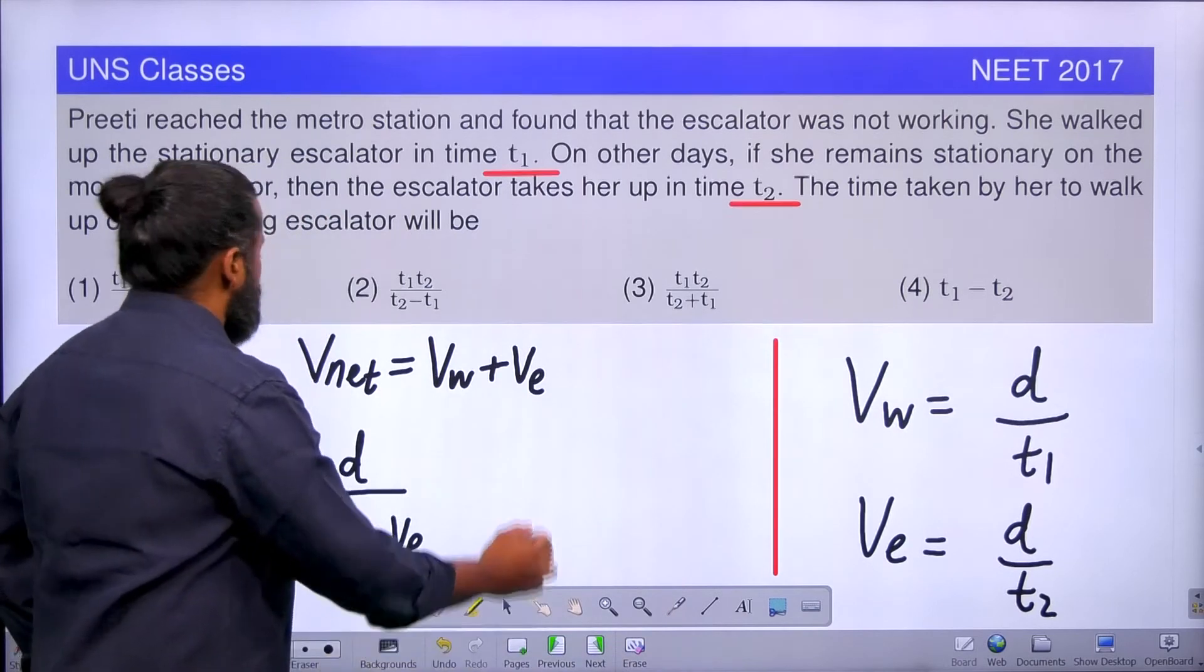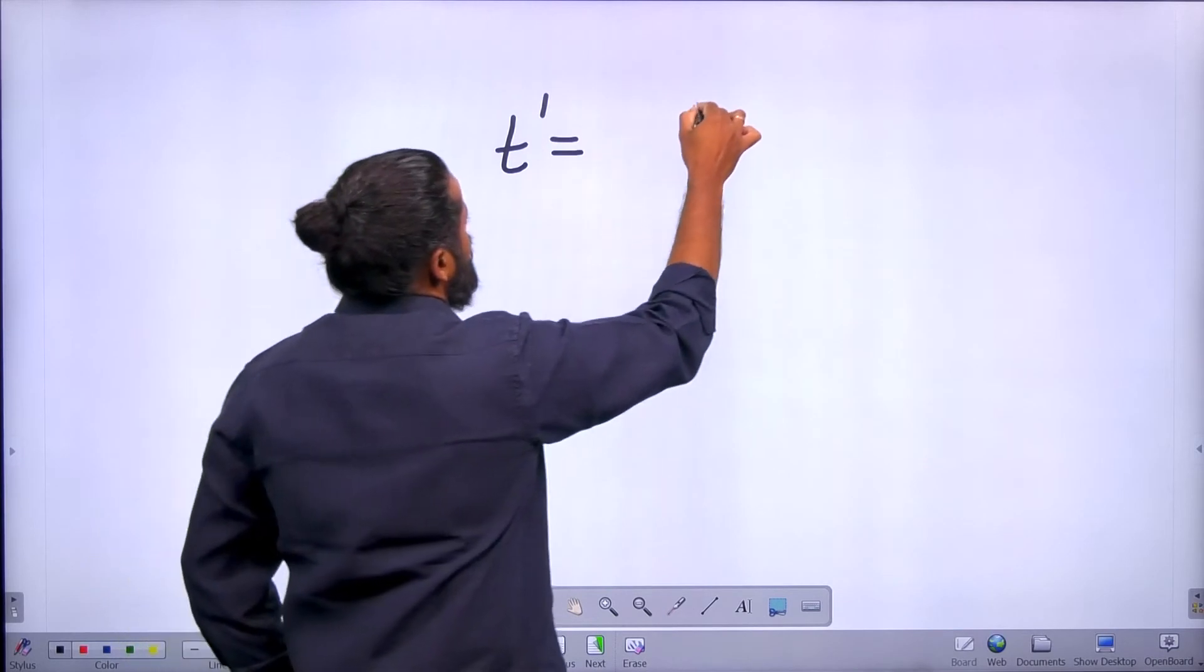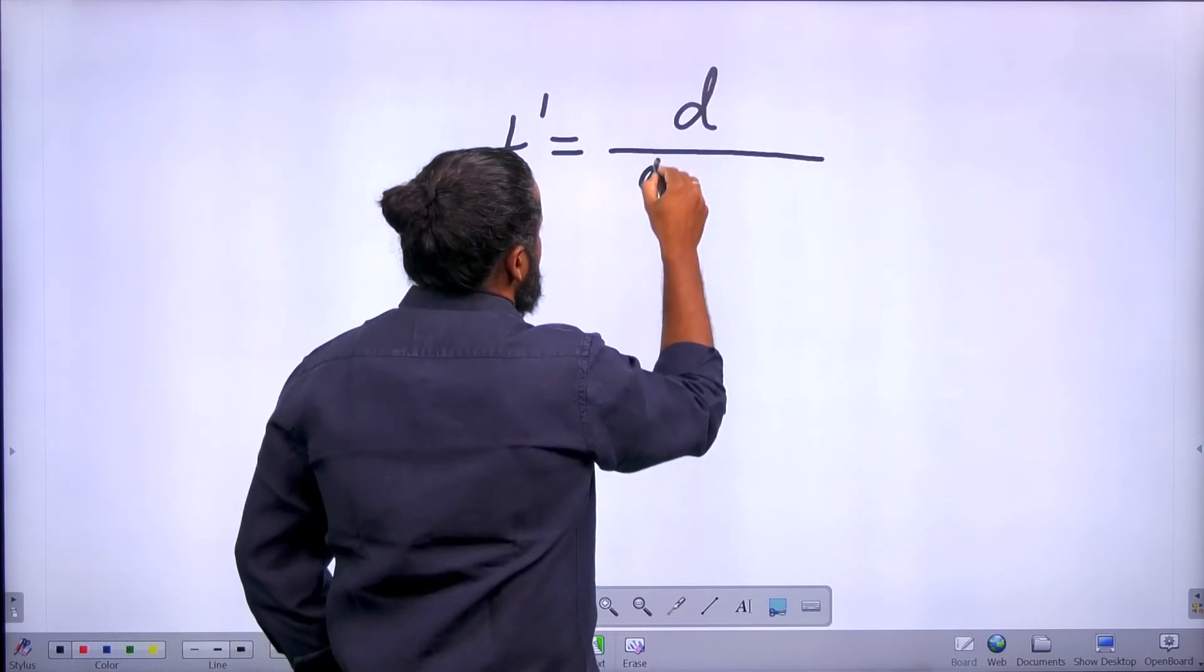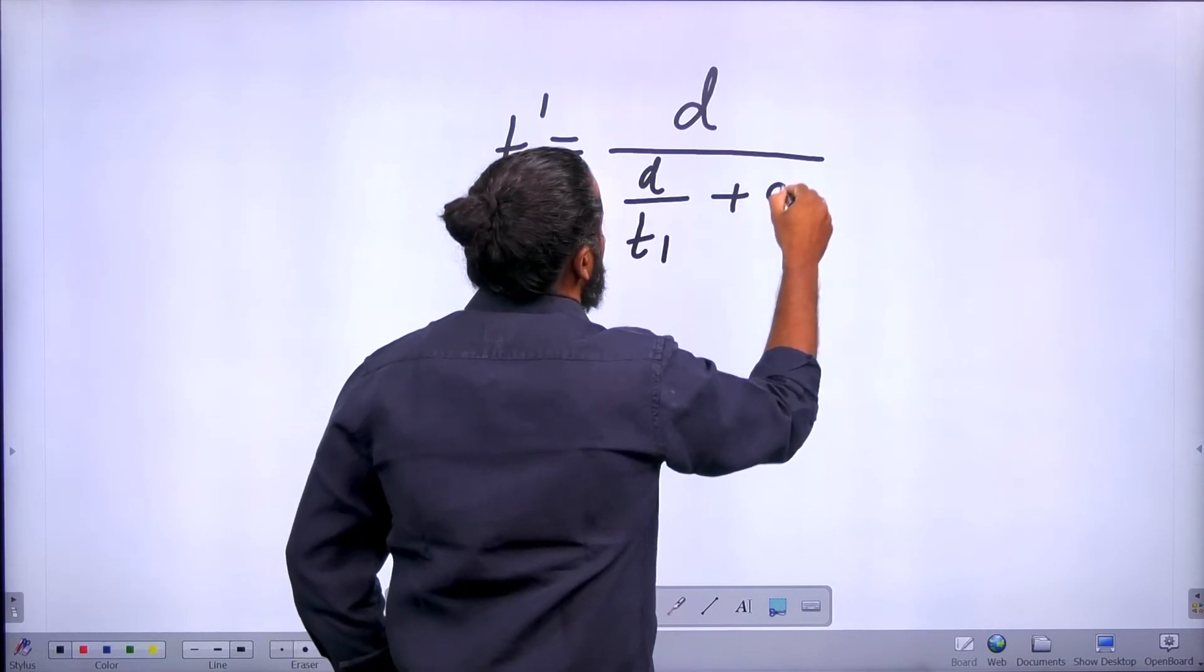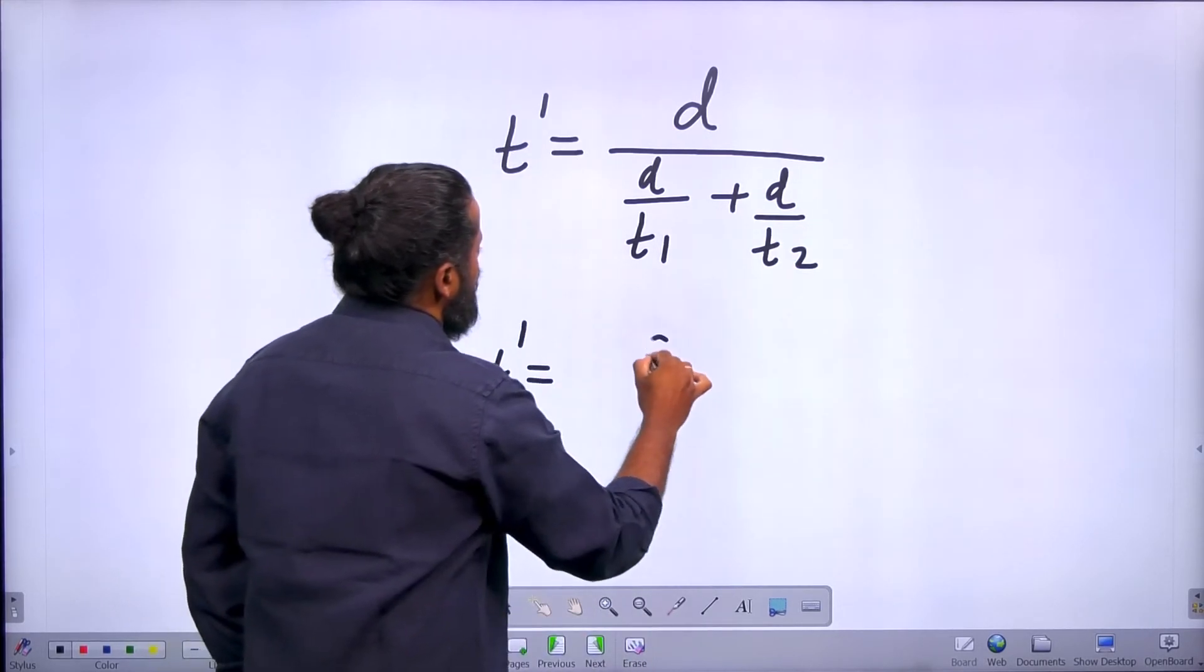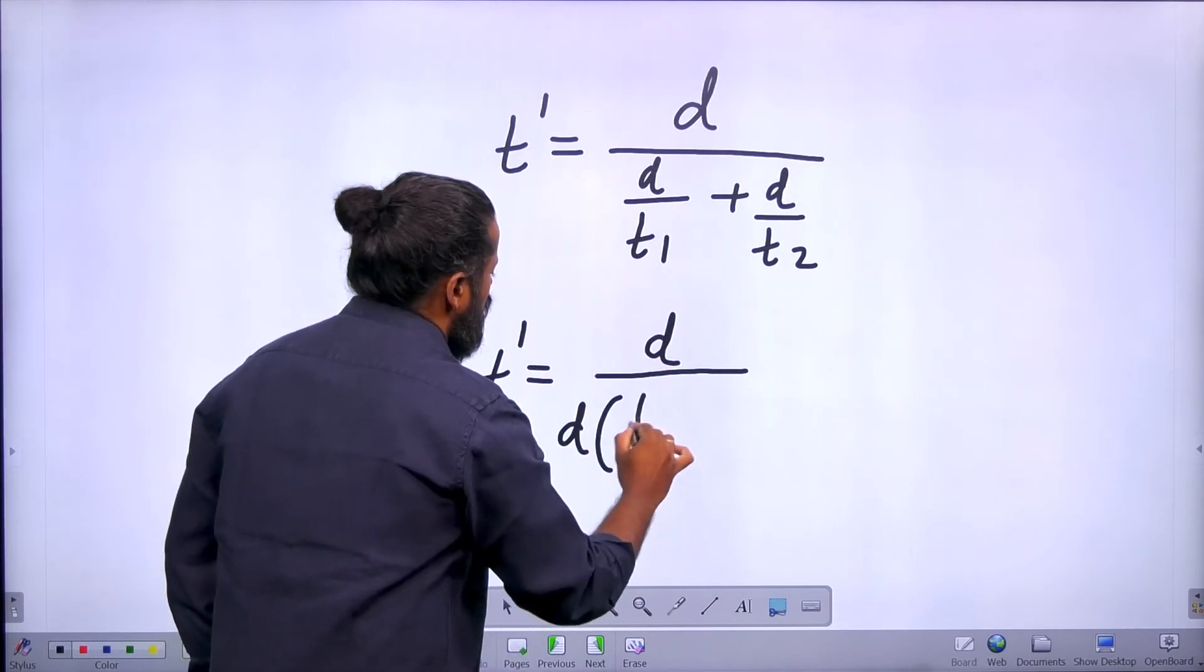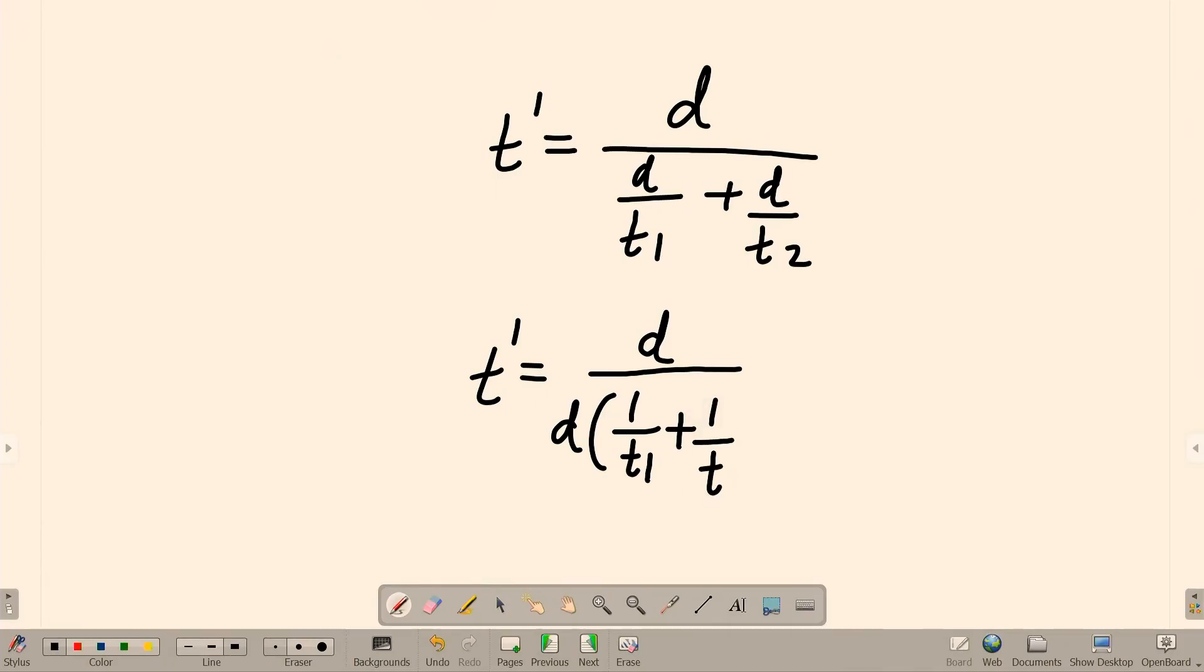So we can see that T dash is equal to distance divided by the velocity. We can say D divided by T1 plus D divided by T2. We can take T dash is equal to D divided by, you can take D common, D into 1 by T1 plus 1 by T2. We can cancel out D directly.